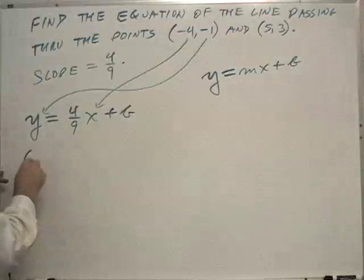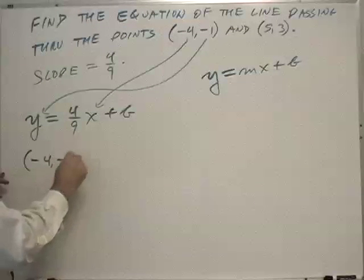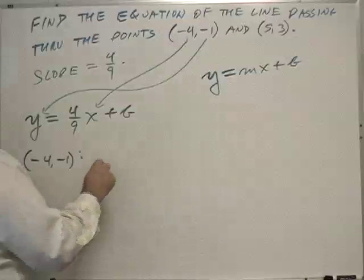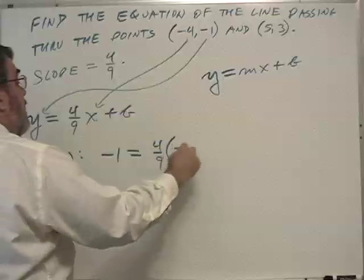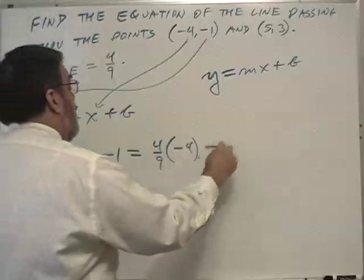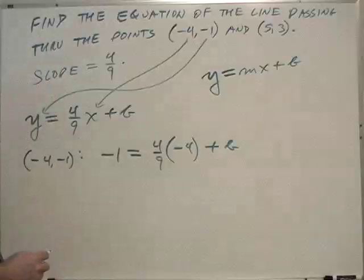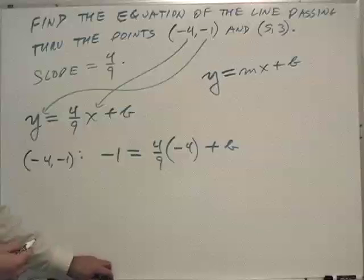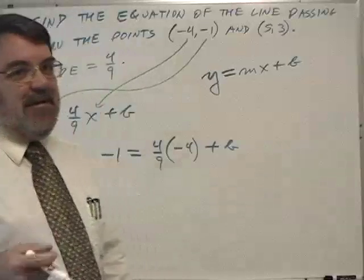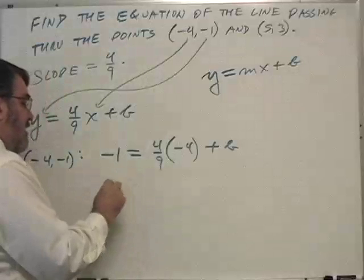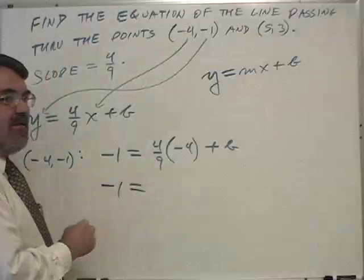So I'm checking the point negative 4, negative 1. And this gives me minus 1 equals 4 ninths times minus 4 plus b. So we need to solve for b. And I know a lot of algebra students just hate fractions, but they're really not that bad.